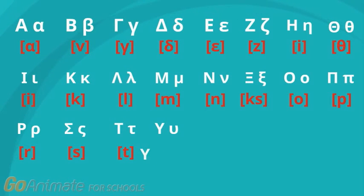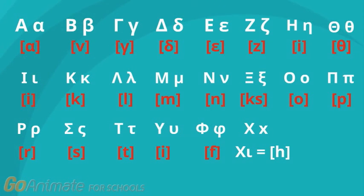Upsilon is read as I, just like Eta and Iota. Upsilon, I. Phi is read as F, as in fat. Phi, F. Chi is read as H, as in hat. Chi, H.